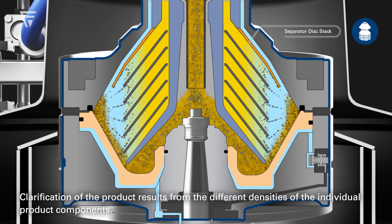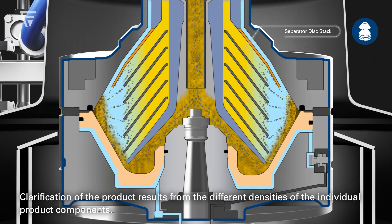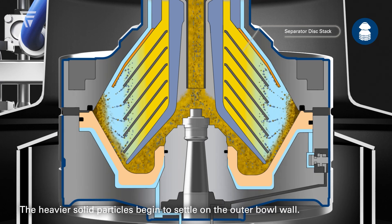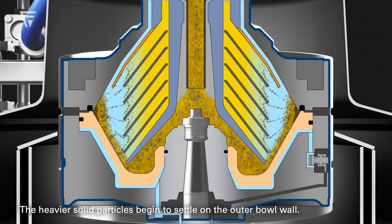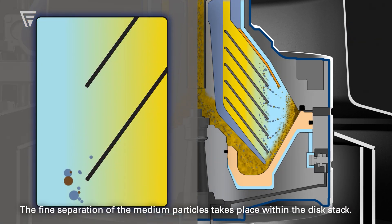Clarification of the product results from the different densities of the individual product components. The heavier solid particles begin to settle on the outer bowl wall. The fine separation of the medium particles takes place within the disk stack.